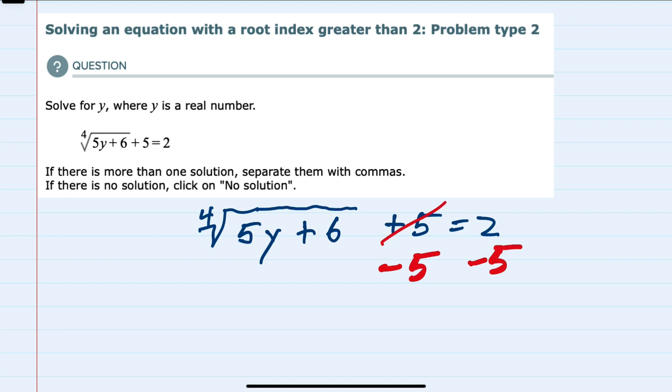That has the effect of canceling on the left so that I have just the fourth root of 5y plus 6 now equals negative 3.